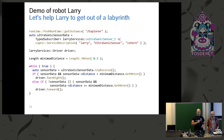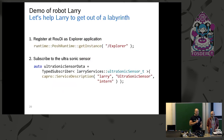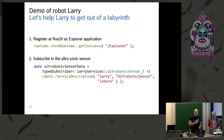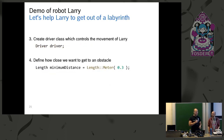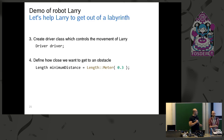Going step by step through the code: first, as Simon mentioned, we register with Roudi — we just say 'hello Roudi, here I am, my name is Explorer.' Second, we subscribe to the ultrasonic sensor data; every sensor and sender has a unique ID, in this case 'Larry ultrasonic sensor.' Then we create a driver class — a simple class from Larry services that handles driving forward, turning right, turning left, stop, and so on. We define the minimum distance before a wall: 0.3 meters.